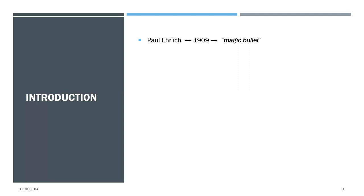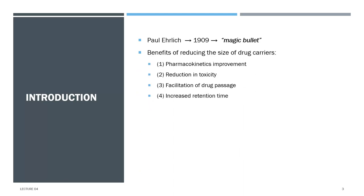Paul Elric proposed the idea of targeted drug delivery to disease cells without damaging healthy cells in 1909, and this strategy has been known as the magic bullet. Since then, a number of drug carrier systems have emerged including immunoglobulin, serum proteins, synthetic polymers, liposomes, microspheres, and neosomes. Reducing drug carriers to the nanoscale improves pharmacokinetic biodistribution, reduces toxicity by accumulating drug at the target site, and increases interaction time in biological systems.